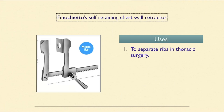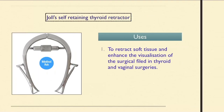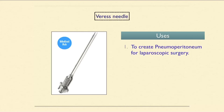Finochietto's self-retaining chest wall retractor is used to separate ribs in thoracic surgery. Joël's self-retaining thyroid retractor is used to retract soft tissue and enhance visualization of the surgical field in thyroid and vaginal surgeries.